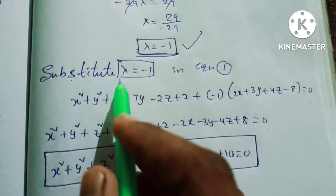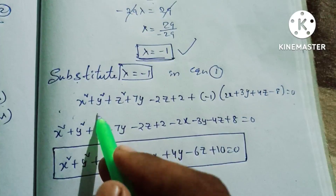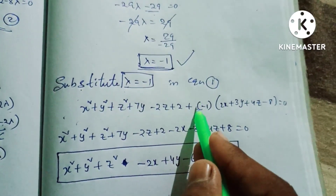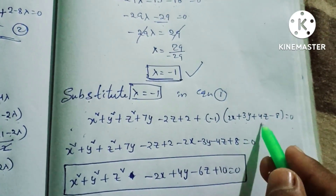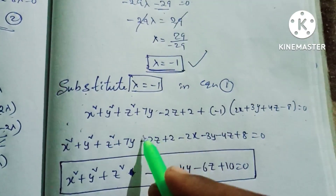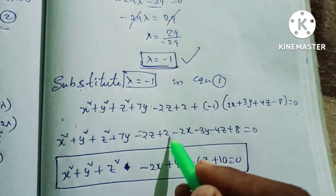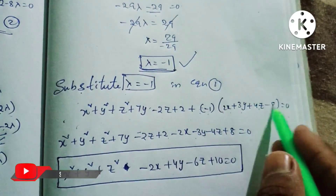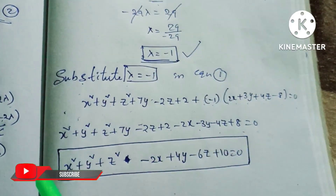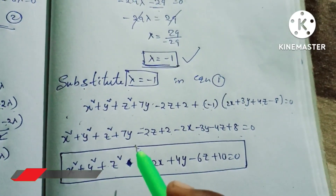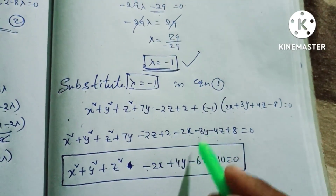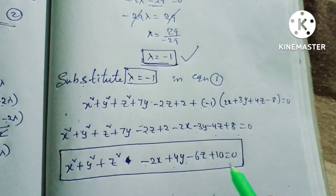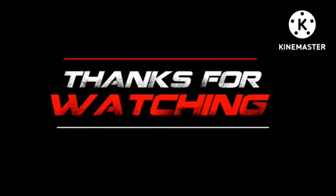Substituting λ = -1 into equation 1: x² + y² + z² + 7y - 2z + 2 + (-1)(2x + 3y + 4z - 8) = 0. This gives x² + y² + z² - 2x + (7 - 3)y + (-2 - 4)z + 2 + 8 = 0, which simplifies to x² + y² + z² - 2x + 4y - 6z + 10 = 0.